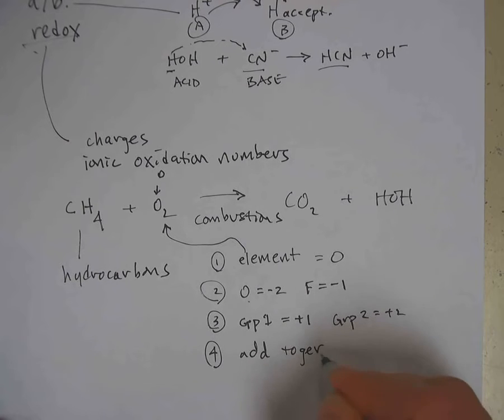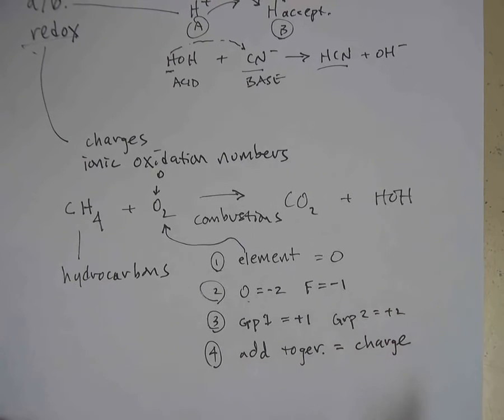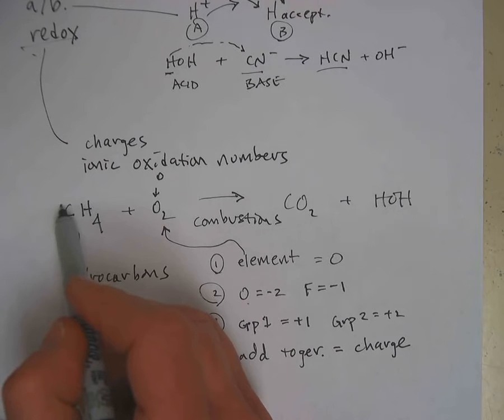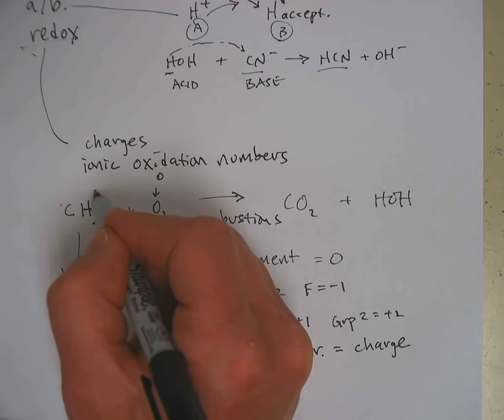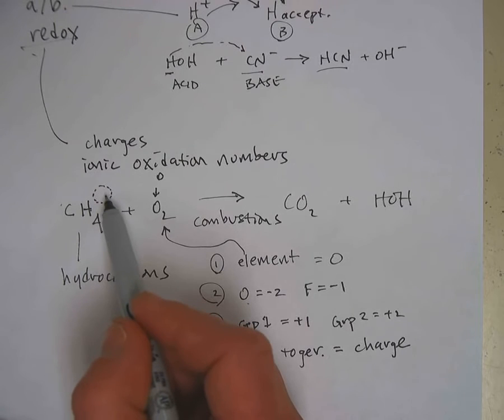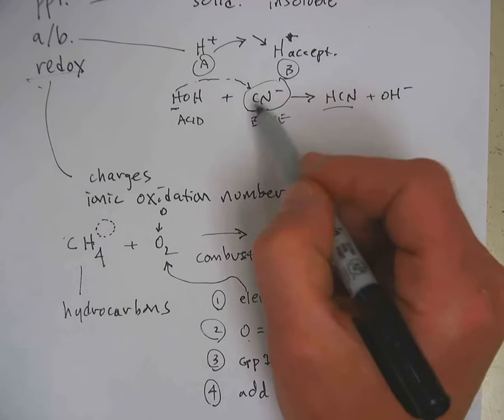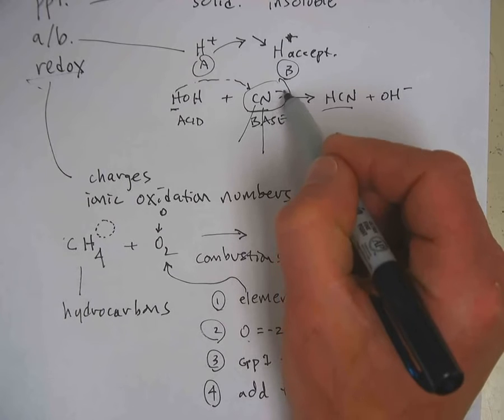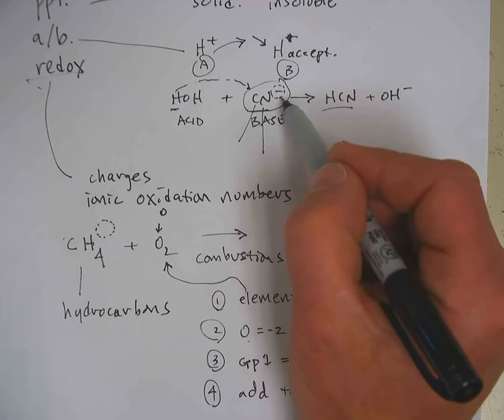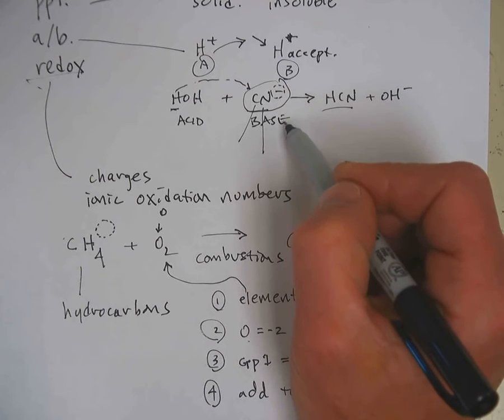Rule number four is that the oxidation numbers have to add together to equal the charge on the specie. And in here, C and H would have to add together to equal the charge that's written in the upper right-hand corner. There's no number written here, so we assume it's zero. Up here in cyanide, carbon plus nitrogen would have to add together to equal negative one, because there's a little negative one charge written up here.